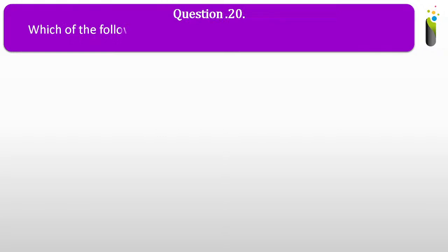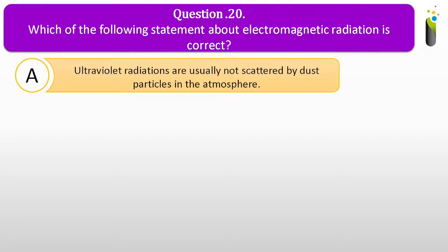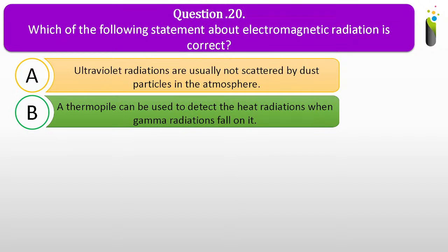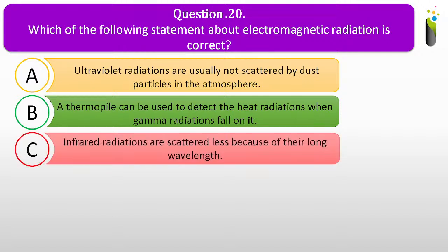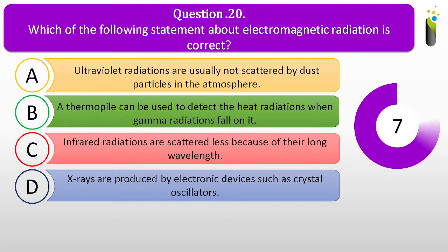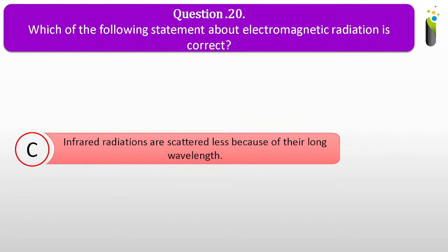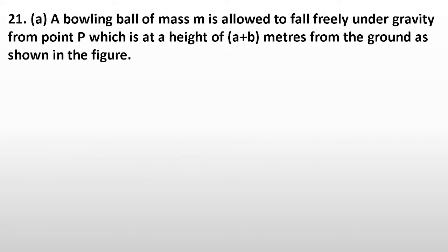Question number twenty. Which of the following statements about electromagnetic radiation is correct? A, ultraviolet radiations are usually not scattered by dust particles in the atmosphere. B, a thermopile can be used to detect heat radiations when gamma radiations fall on it. C, infrared radiations are scattered less because of their long wavelength. D, X-rays are produced by electronic devices such as crystal oscillators. The correct answer is C: infrared radiations are scattered less because of their long wavelength.